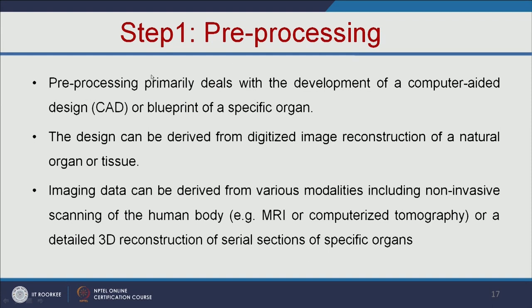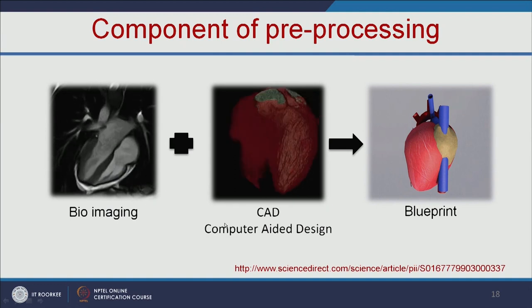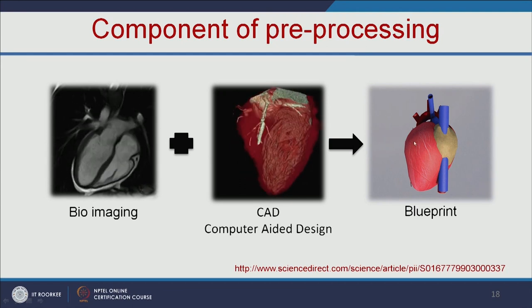Step 1 is pre-processing. Pre-processing primarily deals with the development of a computer-aided design (CAD) or blueprint of a specific organ. The design can be derived from digitized image reconstruction of a natural organ or tissue, and the imaging data can be obtained using MRI or CT scan of the particular organ. So the first step is bioimaging of the particular organ, and then using CAD you make the blueprint of that organ.